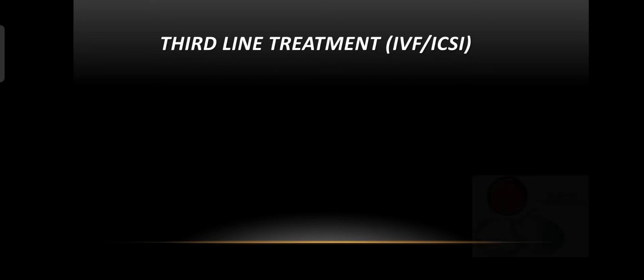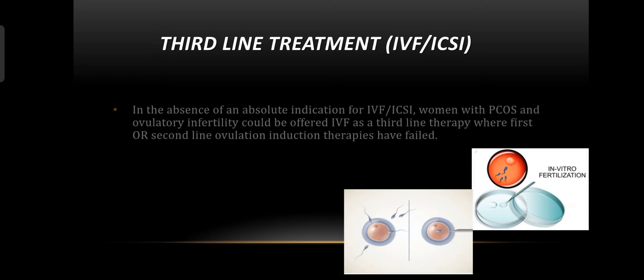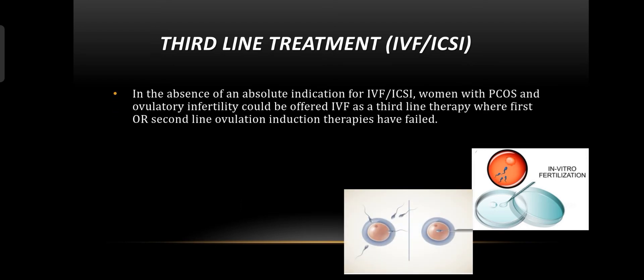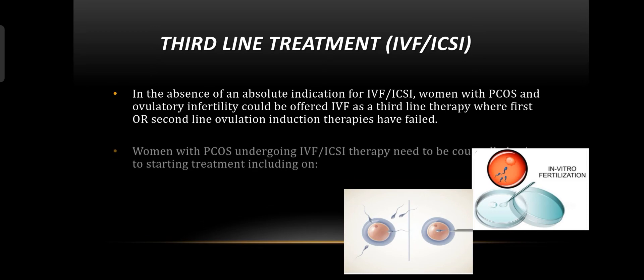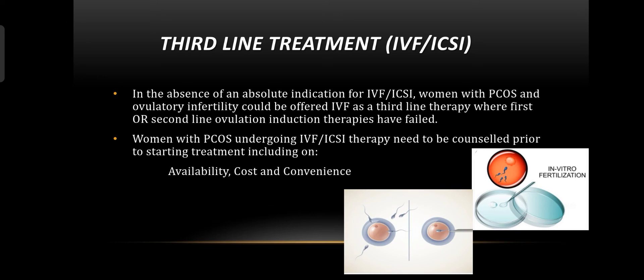The third-line treatment includes IVF or ICSI. In the absence of an absolute indication for IVF or ICSI, women with PCOS and anovulatory infertility could be offered IVF as third-line therapy where first or second-line ovulation induction therapies have failed. Women with PCOS undergoing IVF or ICSI need to be counseled prior to starting treatment, including on availability, cost, and convenience, as well as the increased risk of ovarian hyperstimulation syndrome.